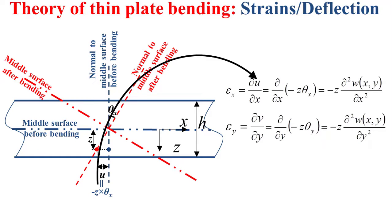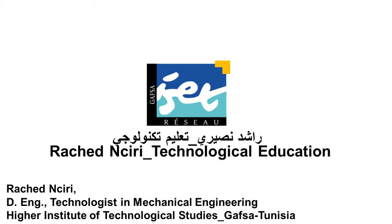Now, the shear strain in the x and y direction, denoted by gamma xy, is equal to the variation of the x component of the displacement u along the y direction, plus the variation of the y component of the displacement v along the x direction, as explained in a previous video. Injecting u = -z·theta_x and v = -z·theta_y, we obtain the shear strain gamma xy equal to minus 2z multiplied by the second derivative of the deflection along the x and y directions.